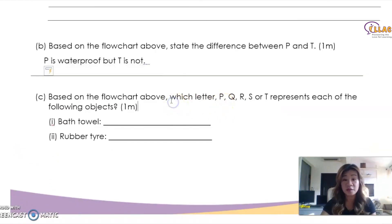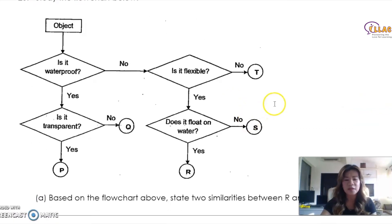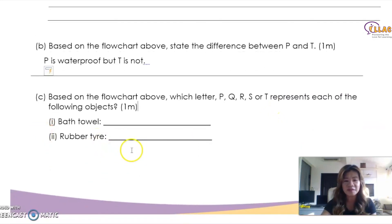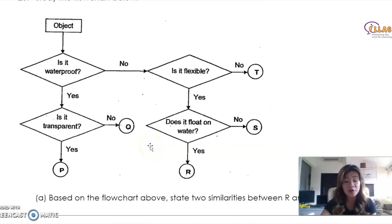Based on the flow chart above, which letter P, Q, R, S, or T represents each of the following objects? Bath towel — do you need it to be waterproof? Of course not; you want it to absorb as much water as possible. Is it flexible? Yes, you want it to be flexible. Does it float on water? No. Therefore the answer is S. What about a rubber tower? Do you need it to be waterproof? Yes, of course. Do you need it to be transparent? No, you do not. Therefore the answer is Q.